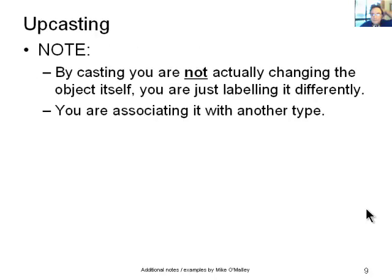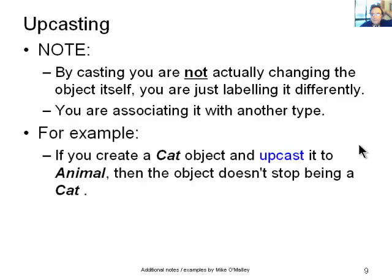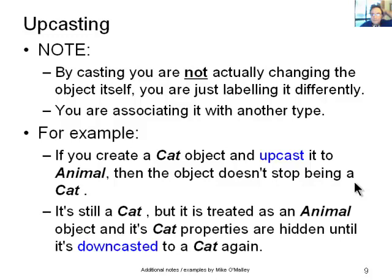So upcasting. By casting, you are not actually changing the object itself. You are just labeling it differently. You're getting Java to treat it differently. You are associating it with another type. So keep that in mind. You're not actually changing the object itself. You're just temporarily labeling it with a new type. For example, if you create a cat object and upcast it to animal, then the object doesn't stop being a cat. It's still a cat, just because you upcast it.